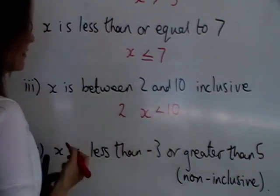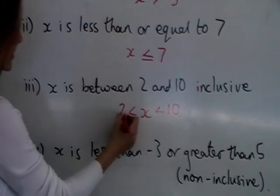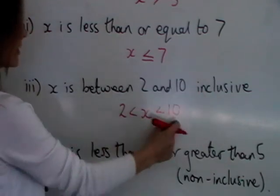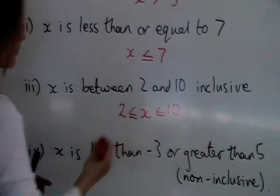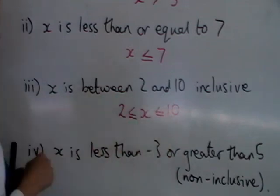It's also going to be greater than the 2, so x is greater than 2 or 2 is less than x. Because it's inclusive, we are including the end values. So when you have it between, you write it as one inequality like this.